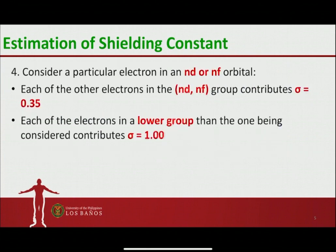Now, if the electron of interest is in an nd or nf orbital, each of the electrons in the same group (nd or nf) will contribute 0.35. But since nd and nf electrons are poor penetrators and are very much shielded, all the electrons in lower groups each contribute 1 to the shielding constant.